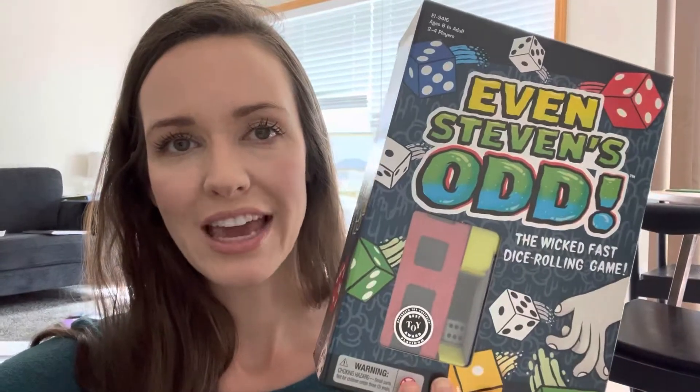It's called Even Stevens Odd, and it is a dice rolling game. So I will walk you through how to play this and what comes inside of it. It's really simple, and I think it's one of the ones that you're going to want in your game kit. We really enjoy it.